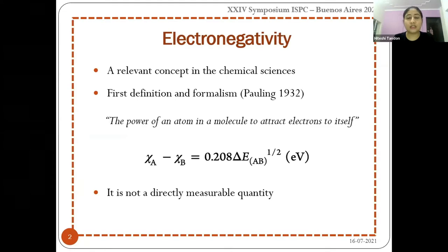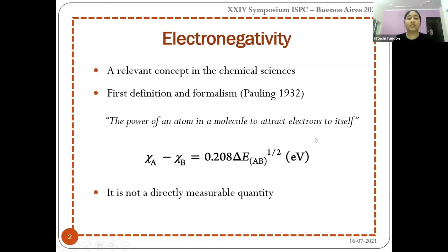Moving on to the literature, Pauling in 1932 was the first one who gave its first definition and formalism. According to Pauling, the power of an atom in a molecule to attract electrons to itself is known as electronegativity. Pauling gave the formalism shown here — electronegativity can be calculated as the covalent bond's electronegativity difference. Electronegativity cannot be observed directly, hence it cannot be obtained experimentally, so we resort to computation and theoretical approaches.